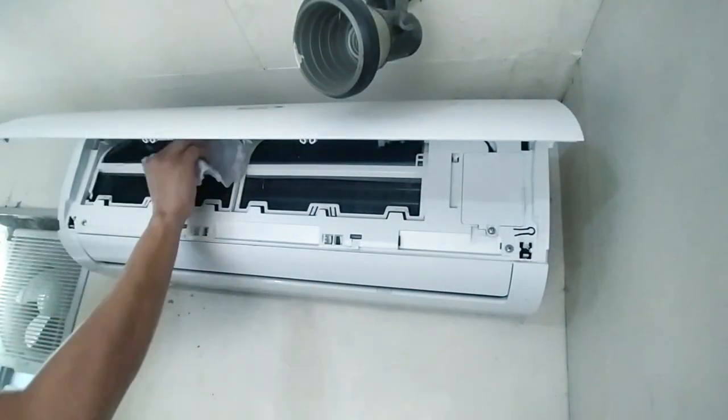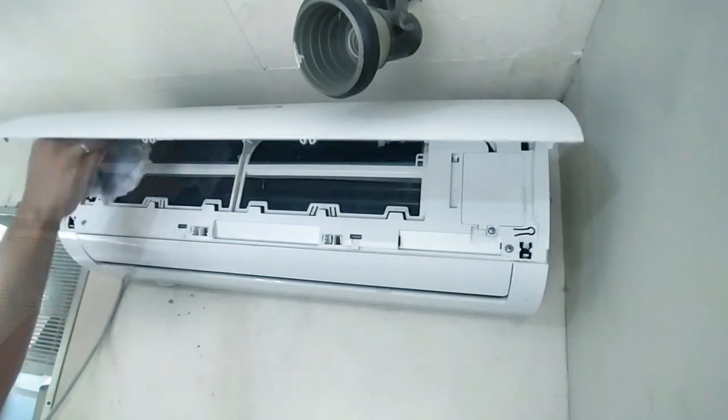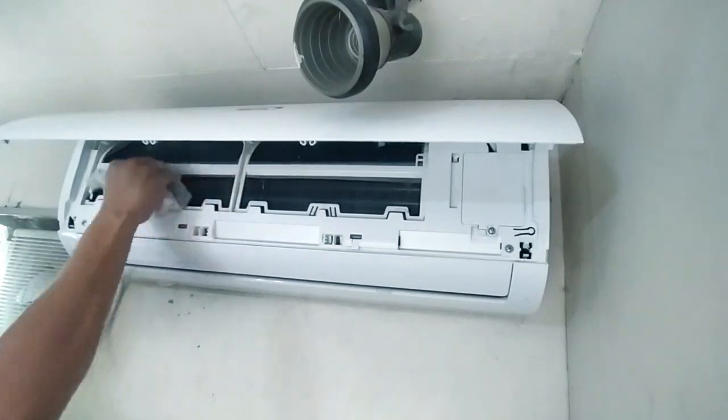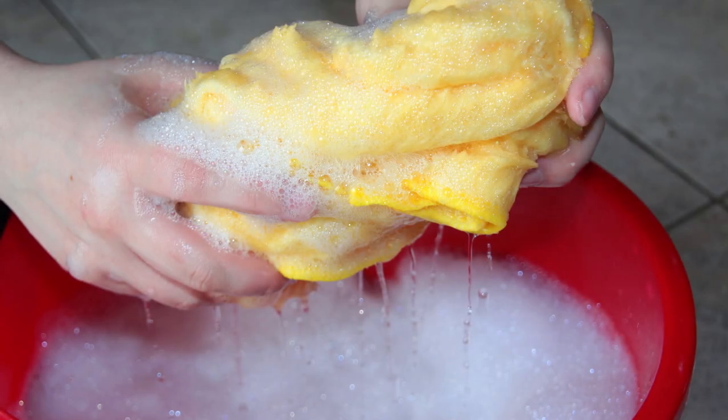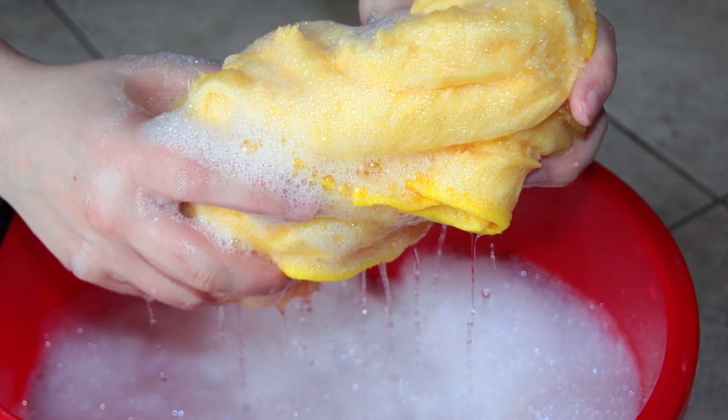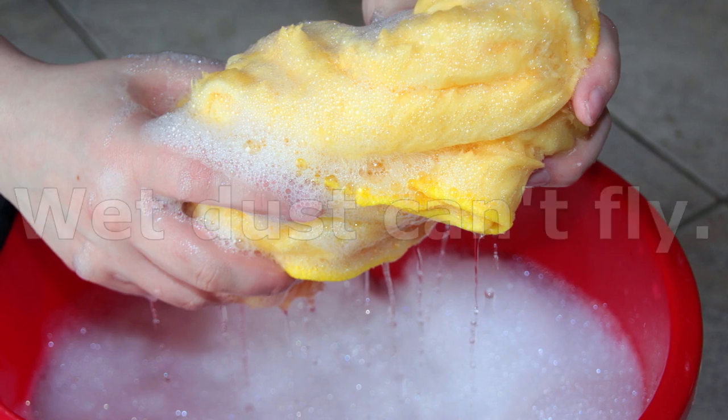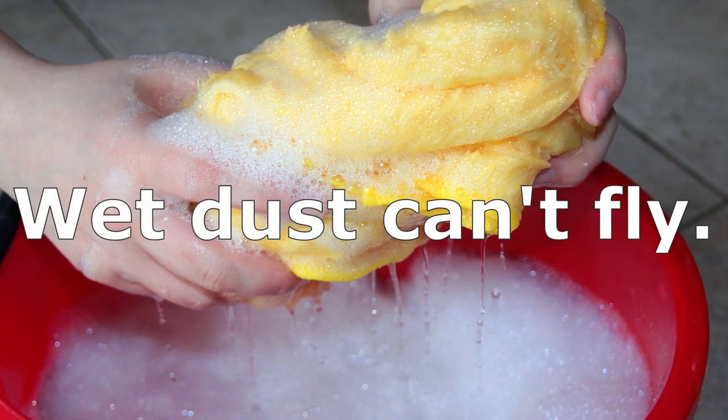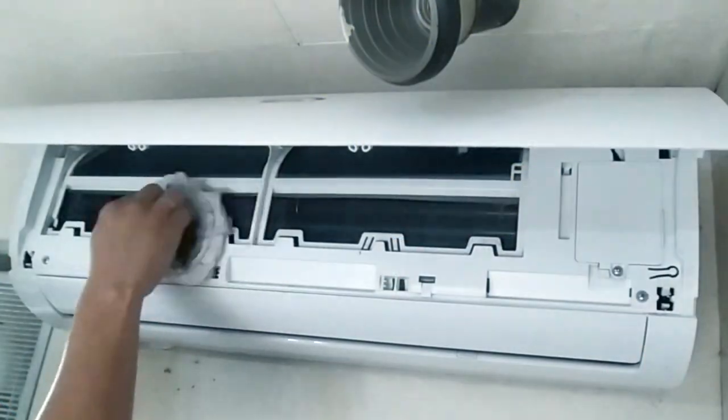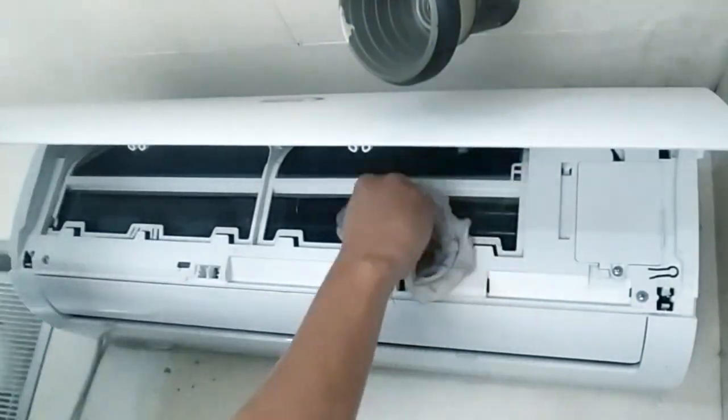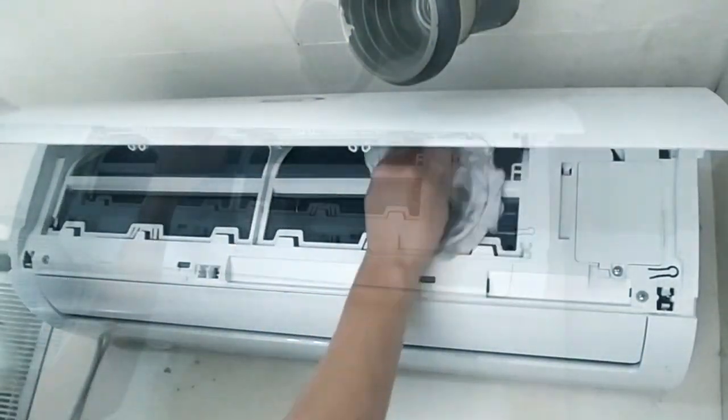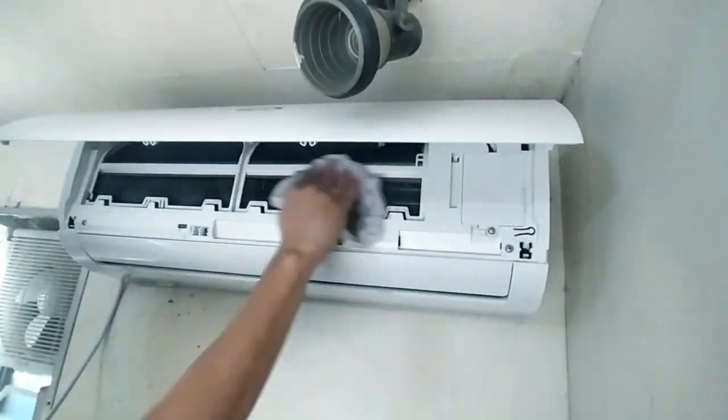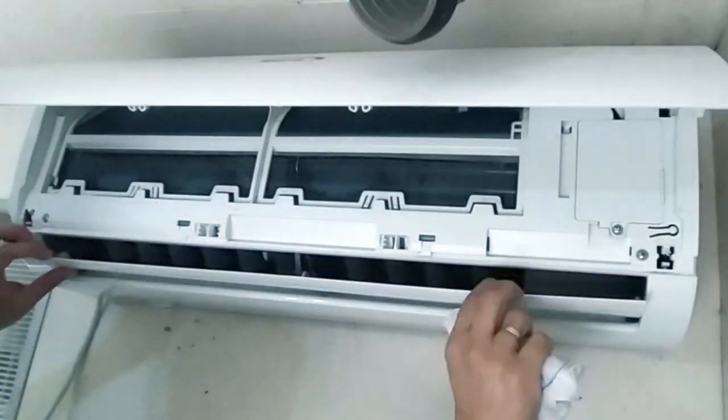You might be wondering why do we need to use a damp cloth? It's because if we use a dry cloth or even a brush, we'll just be agitating the dust particles and cause them flying around the room. So think about this, wet dust can't fly. Also, focus on other parts where dust and grease can accumulate such as the fins, underneath the front panel, and the louvers.